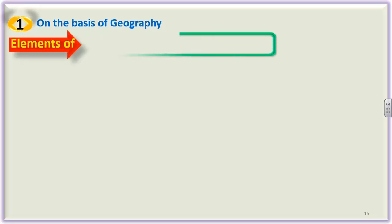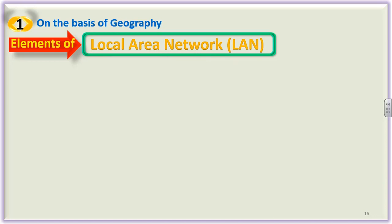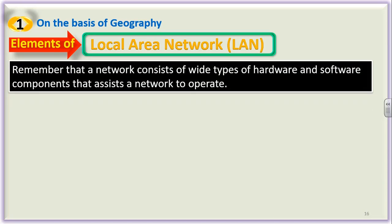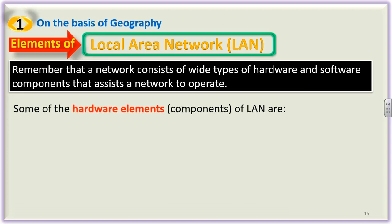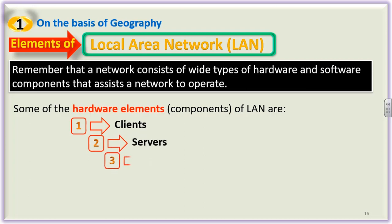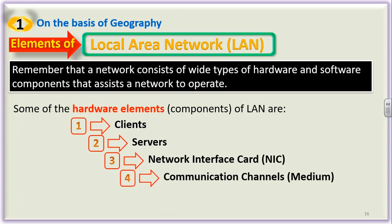What are the elements which make a local area network? A network consists of wide types of hardware and software components that assist the network to operate. The hardware components of LAN are: first, clients; second, servers; third, network interface card (NIC); and the fourth one is communication channel, that is, the medium — these are wires.